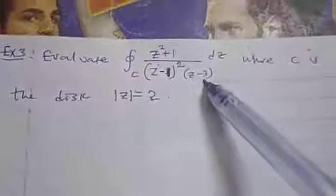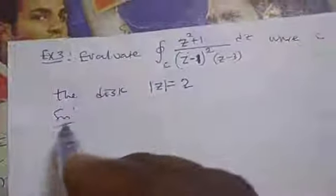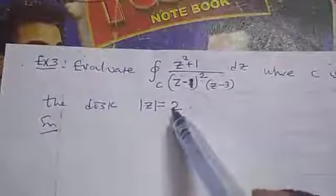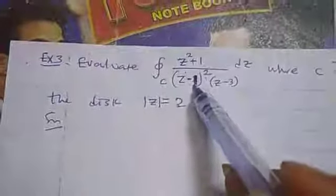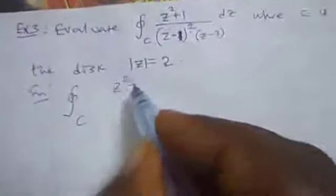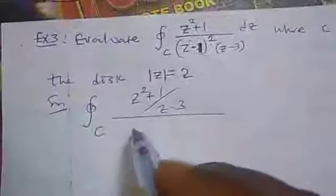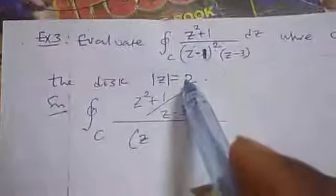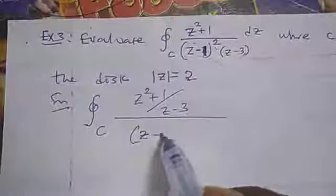Example 3: Evaluate the integral where C is the disk of radius 2. We observe that 1 and minus 1 are the singular points. Inside the disk of radius 2, the point 3 lies outside, so by the Cauchy Integral Theorem its contribution is zero. But 1 lies inside this disk, so we apply the Cauchy Integral Formula.